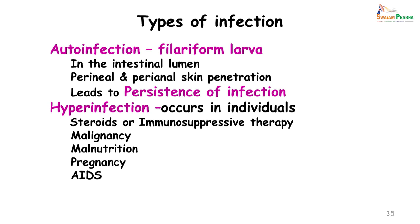The types of Strongyloides infection are: autoinfection, where the filariform larva re-enters the intestinal lumen or penetrates the perianal skin, leading to persistence of infection. Hyperinfection occurs in individuals usually on steroids or immunosuppressive therapy due to malignancy, in malnourished patients, rarely in pregnant patients, and in AIDS patients, where immunosuppression is a major factor.